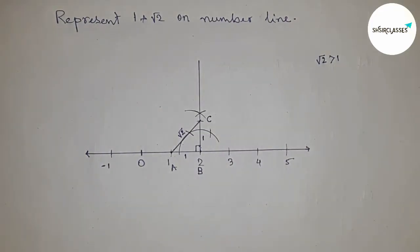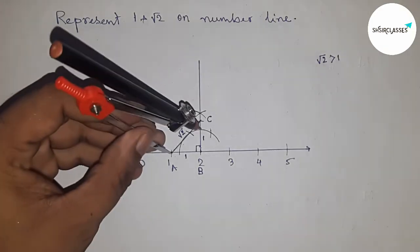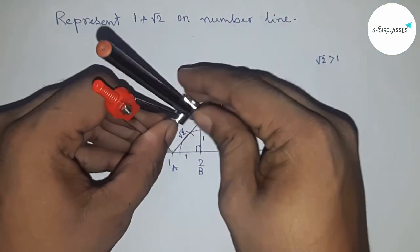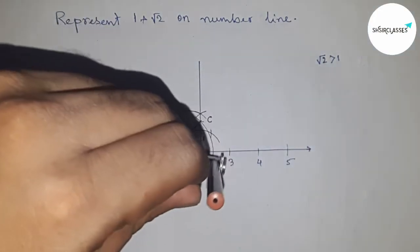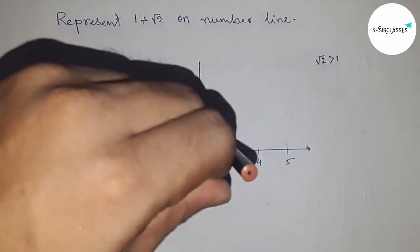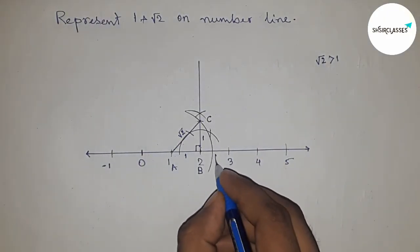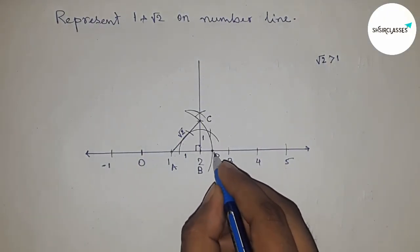Next we have to construct an arc, so taking the length with the compass and drawing an arc which cuts the number line at point B. This is the representation of 1+√2 on the number line.